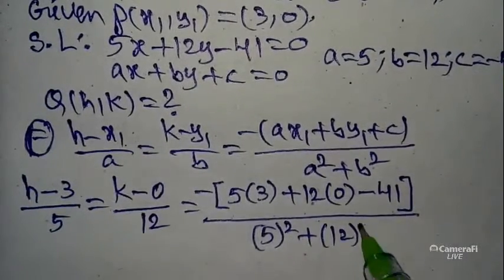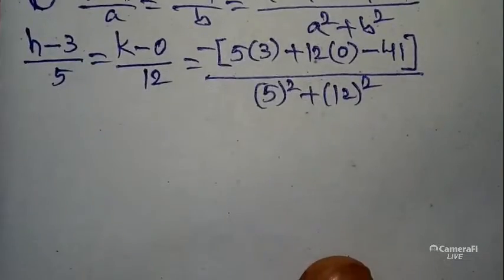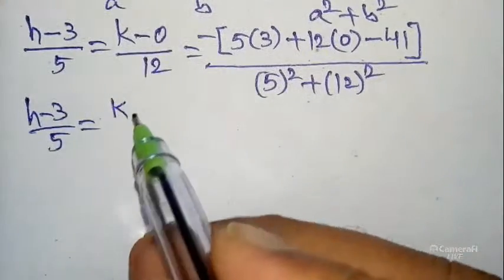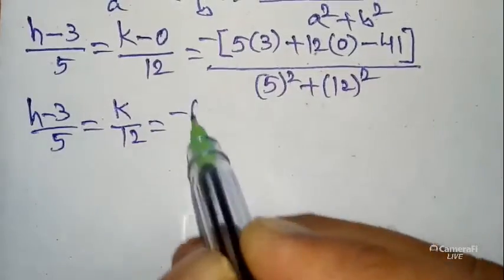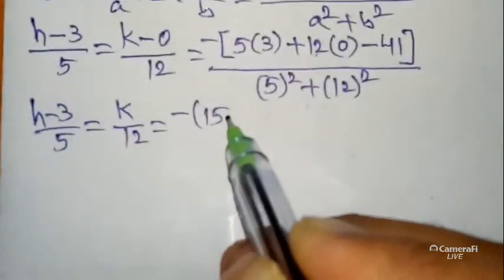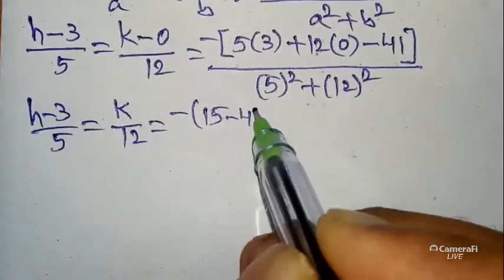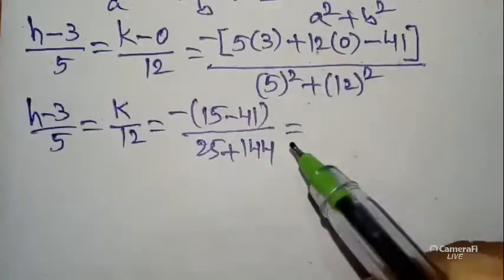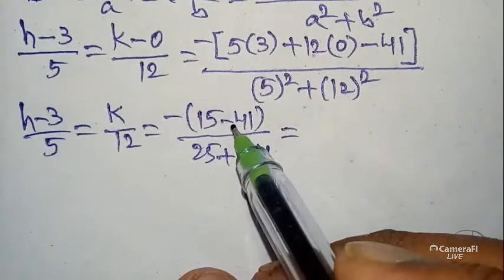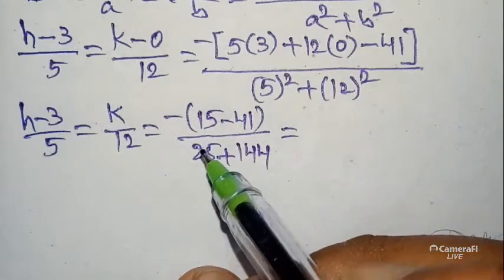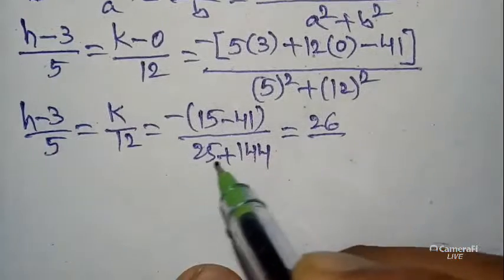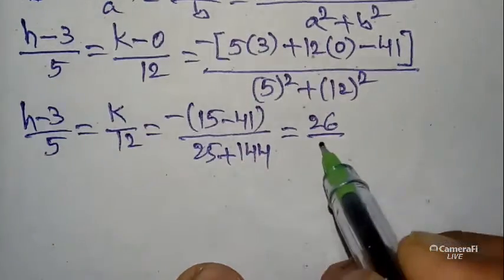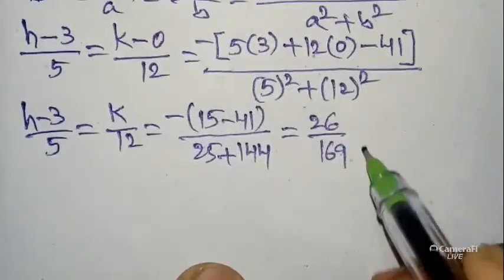Simplifying: (h − 3)/5 = k/12 = −(15 + 0 − 41) / (25 + 144). Inside: −15 + 41 = 26. Denominator: 25 + 144 = 169. So the right-hand side equals 26/169.